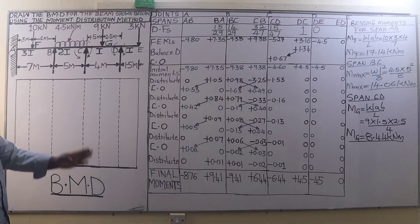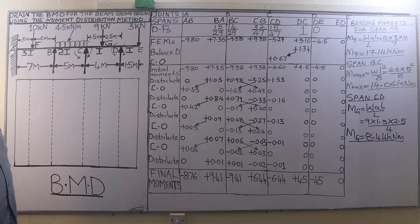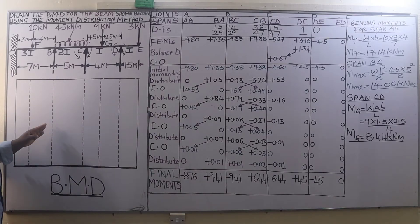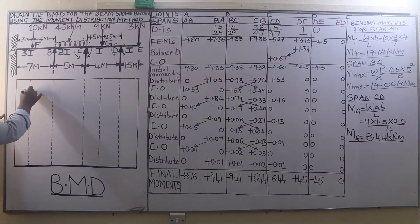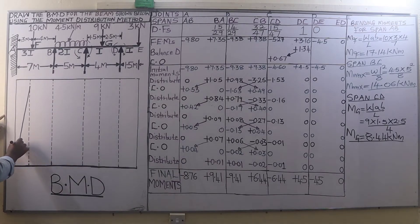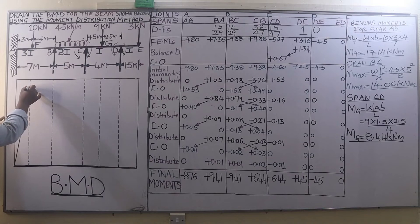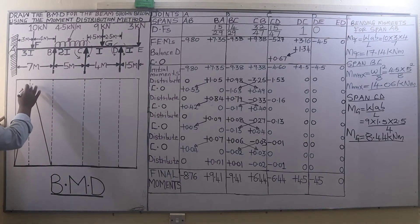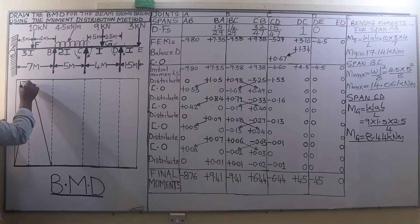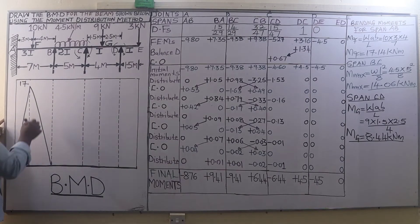After that we plot our bending moment diagram. Starting with the bending moments due to vertical loads: in span AB we have a bending moment of 17.14, so we plot it at the highest point — 17.14 kilo-newton-metres.